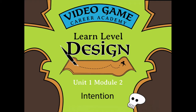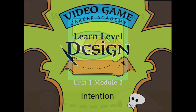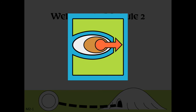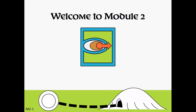Unit 1, Module 2. Welcome to Module 2. Remember that this course will teach you a proven level design process that professional level designers have used on a variety of projects, from AAA console games to mobile titles. But before we get to the specific steps of the process, you need to understand my underlying design philosophy and my approach to game development. Otherwise, the steps won't make much sense. In this module, we'll dig deeply into one of the principles of my process: the concept of intention.